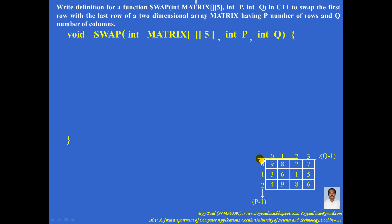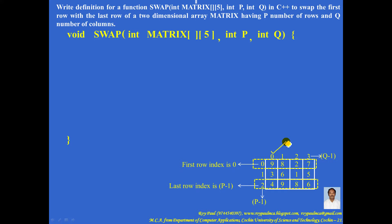We need to swap the first row with the last row, so these two rows must be swapped. For the first row, the index is 0, and for the last row, the index is p minus 1. Let me save the column index in variable j. The name of the element in the first row is matrix[0][j], where matrix is the name of the two-dimensional array, the row index is mentioned first followed by the column index. The name of the element in the last row is matrix[p-1][j], where p minus 1 is the row index and j is the column index.